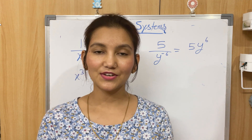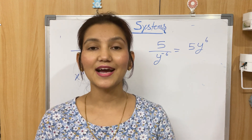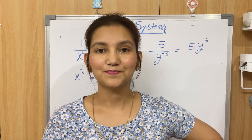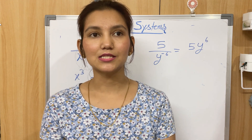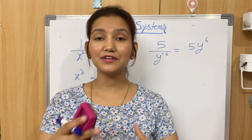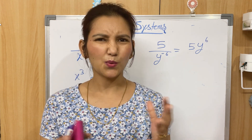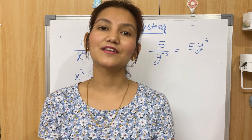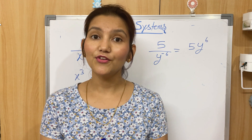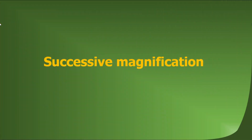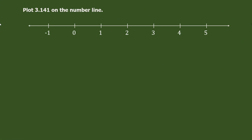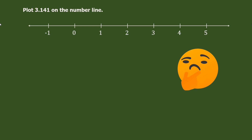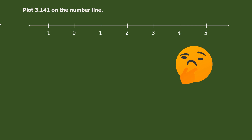Now that's laws of exponents done. Let's move to the last topic of the day: successive magnification. Successive means repeatedly, and magnification means increasing the size. What we are going to magnify here is the number line. We need to magnify on the number line.